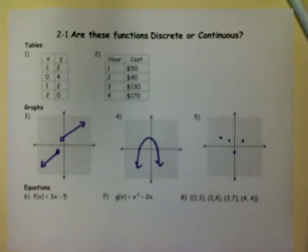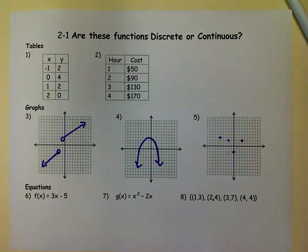Greetings, this is M Squared, and today we're going to talk about how we tell if a function is discrete or continuous.